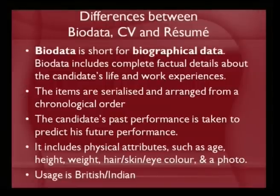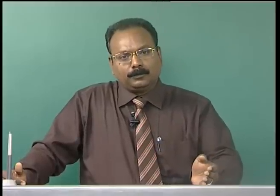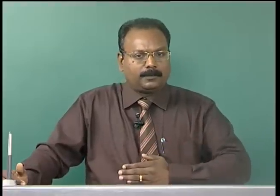The items in bio data are serialized — even serial numbers are given 1, 2, 3, 4 — and arranged in chronological order: first thing first. So name, date of birth, where you are born, place, who is your father — it goes like that. Education is also arranged in chronological order: starting from 10th, then higher secondary, then undergraduate, then postgraduate, then research (PhD), then postdoctoral, then other experiences, then industrial experiences — so the sequence starts from the first and goes forward.